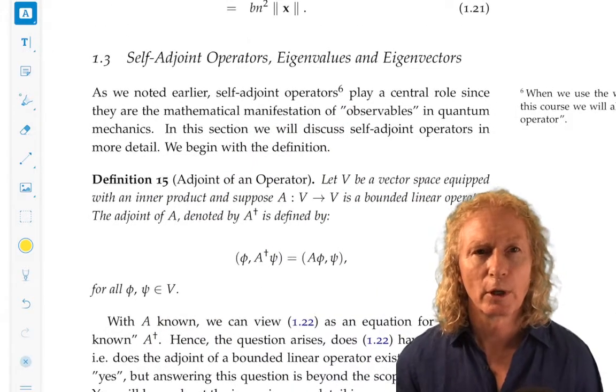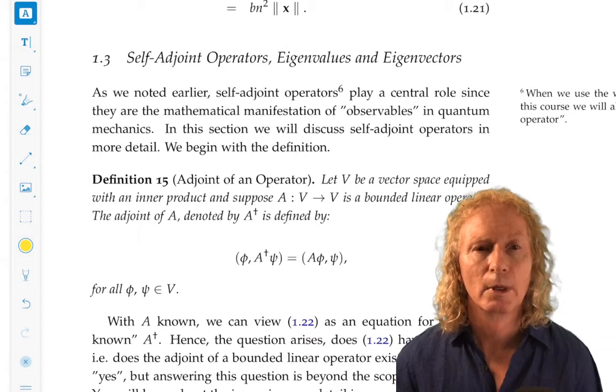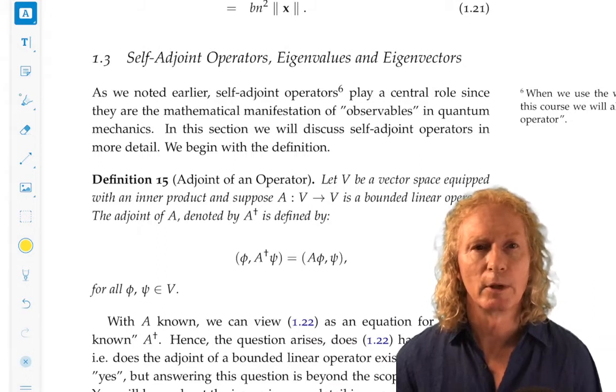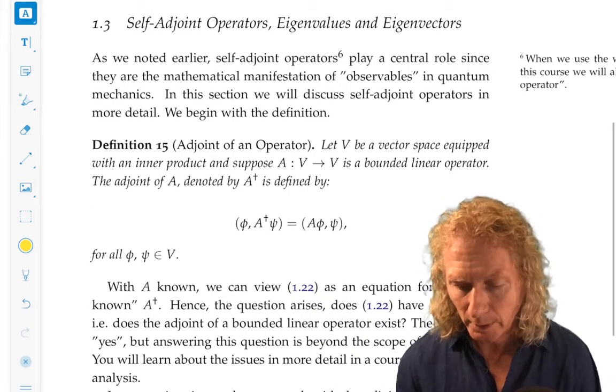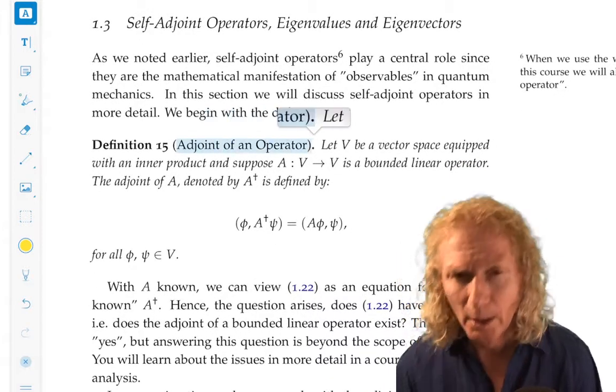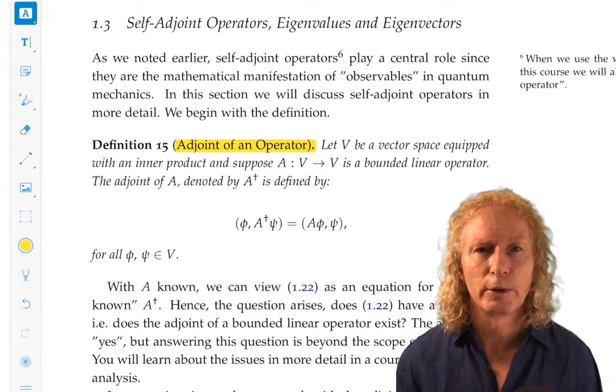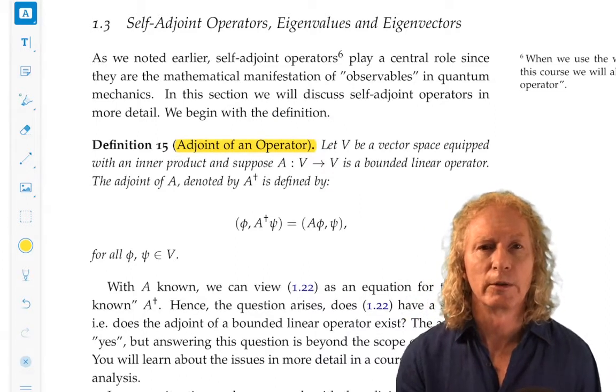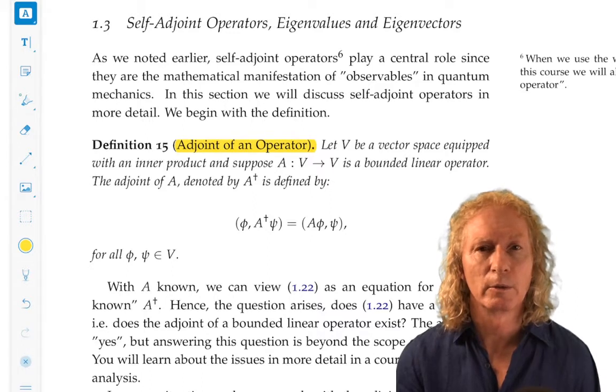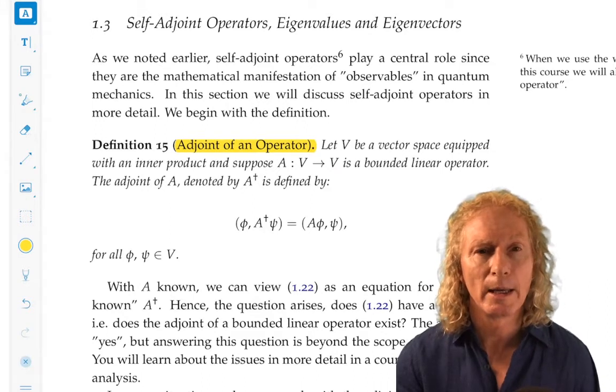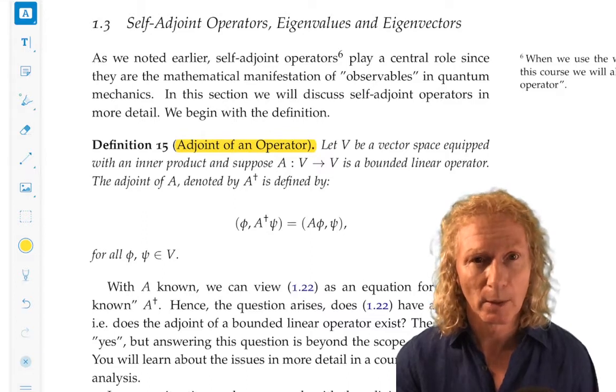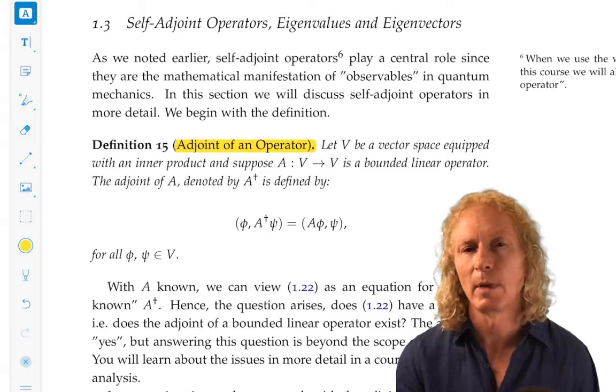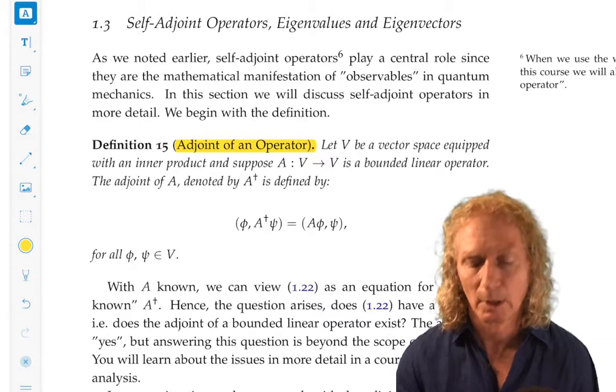In order to talk about self-adjoint operators, we need to first talk about the adjoint of an operator. Definition 15 is extremely important to pay close attention to and get your head around. This setting is let V be a vector space complex with an inner product, and we're going to consider a linear operator A mapping V into V. We want it to be a bounded linear operator, and you can check later on why that might be the case and why that could mess up the definition.